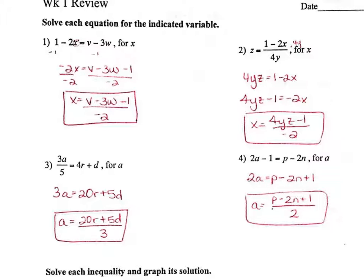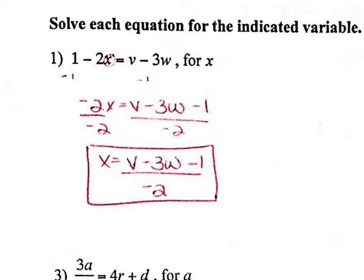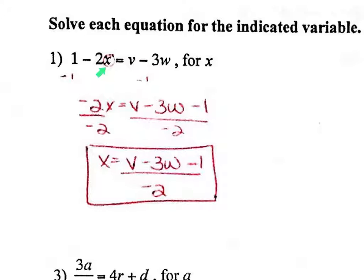Questions 1 through 4 is where we're solving and rearranging for the variable. In question 1, they're asking us to solve for x — notice that I circled x. This negative 2 is attached to the x by multiplication, so it's always got to be the last thing we get rid of. I'm going to get rid of this 1 by subtracting 1. Because 1 does not subtract from v or w, I just have v minus 3w minus 1. Then I'm ready to divide by negative 2 on both sides, so the answer is v minus 3w minus 1, all over negative 2.